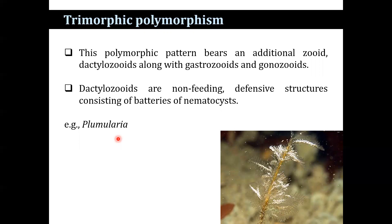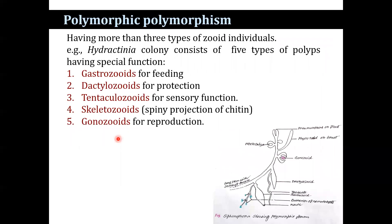The last category is polymorphic, having more than three types of zooids in a colony, such as gastrozooids for feeding, dactylozooids for protection, tentaculozooids for sensory functions, skeletal zooids which are spiny projections of chitin, and gonozooids for reproduction. This is found in the Hydractinia colony, which consists of five types of such zooids.